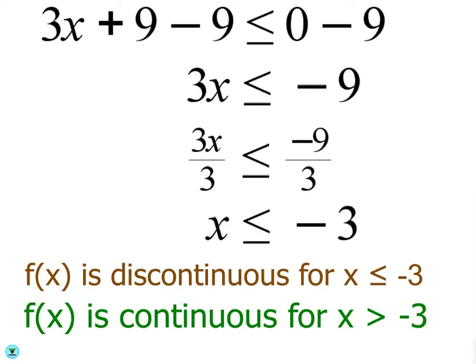So we will subtract 9 from both sides. Since we're dividing by negative 3, we're going to have to flip that middle sign.